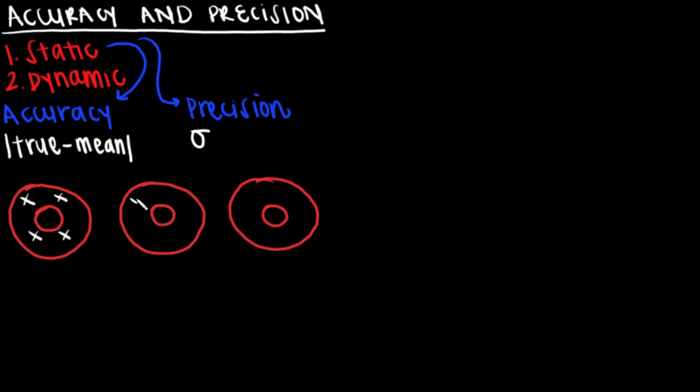Measurements can be accurate but not precise, meaning the average of the measurements is close to the true value, but the measurements themselves can be all over the place and thus not very repeatable. This is an example of hitting the board of a bullseye in every spot but the middle, causing the bullseye to be the average.